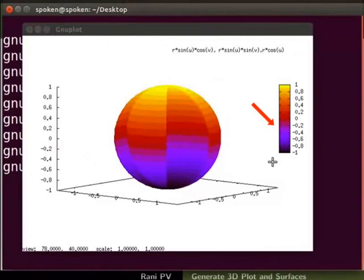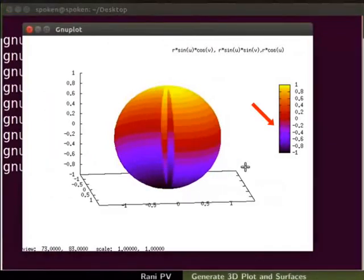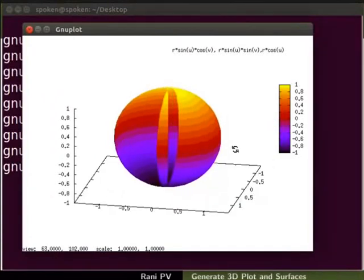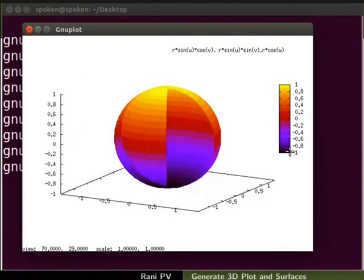The color scale bar for the color gradient is visible on the side. This is called a color box in GNUplot. The values between 1 and 0.8 are colored in yellow. Values between minus 0.8 to minus 1 are colored in deep purple.